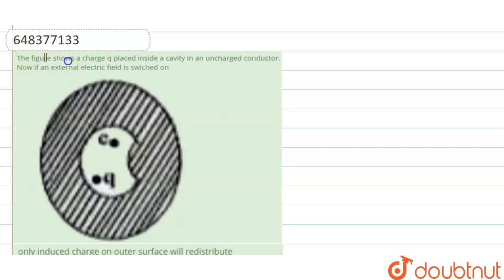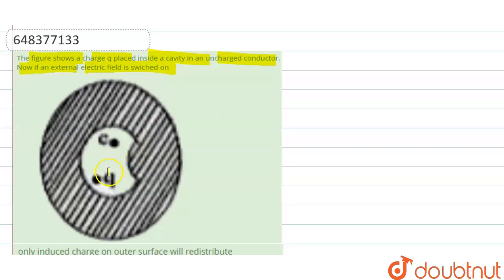The figure shows a charged cube placed inside a cavity in an uncharged conductor. This conductor is uncharged — meaning there is no charge on the conductor itself — but there is a cavity at the center position, and in this cavity there is a charge q placed. The total conductor is uncharged.